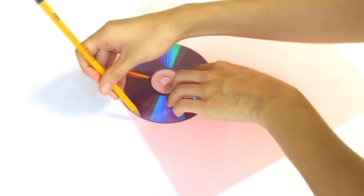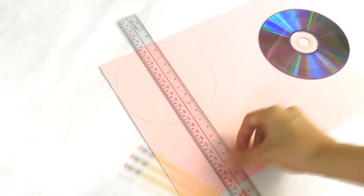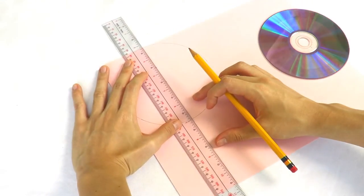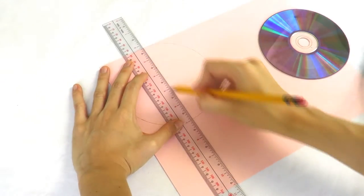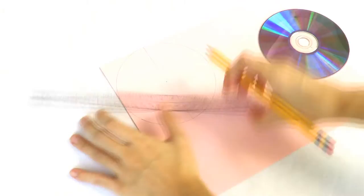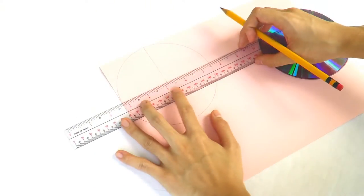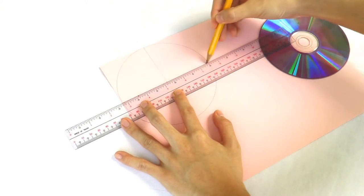The first thing you want to do is to trace your CD on the pink paper and mark the center. Then grab your ruler and draw a straight line across the point you marked off. Draw another line crossing the one you just made to create four quadrants in the circle. It should look like pizza with four equal sizes.